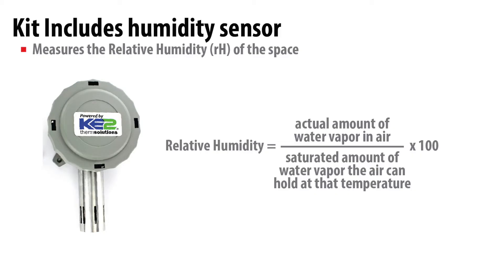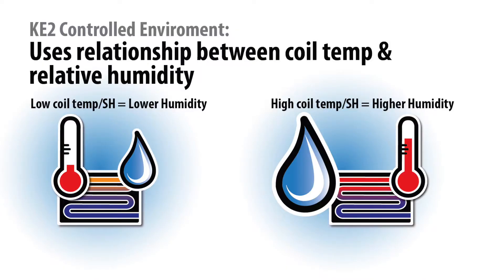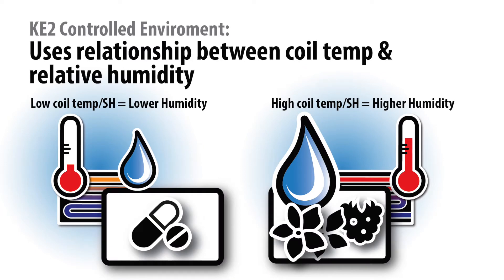The Key2 Controlled Environment kit includes a humidity sensor which measures the relative humidity in the refrigerated environment. The controller will manage humidity in two stages. First, the controller uses the refrigeration system's inherent dehumidification property and maximizes it by increasing and decreasing the coil temperature to remove more or less water depending on whether the humidity needs to be increased or decreased. You can also add an external digital switch for a humidifier, dehumidifier, or external electric heat.